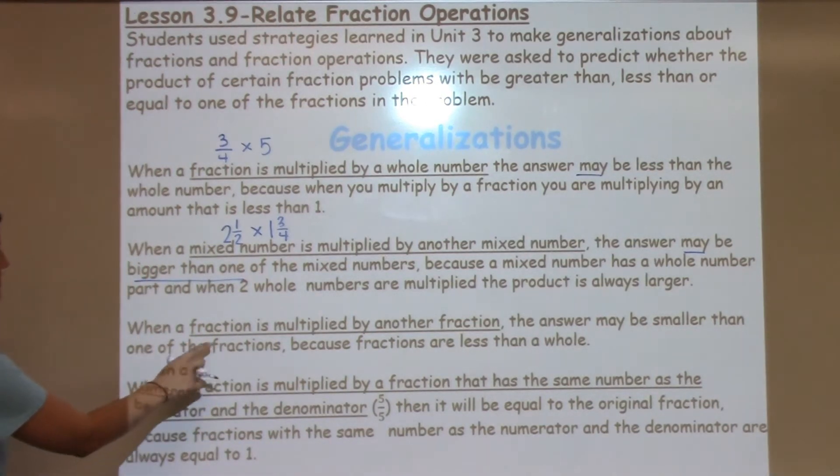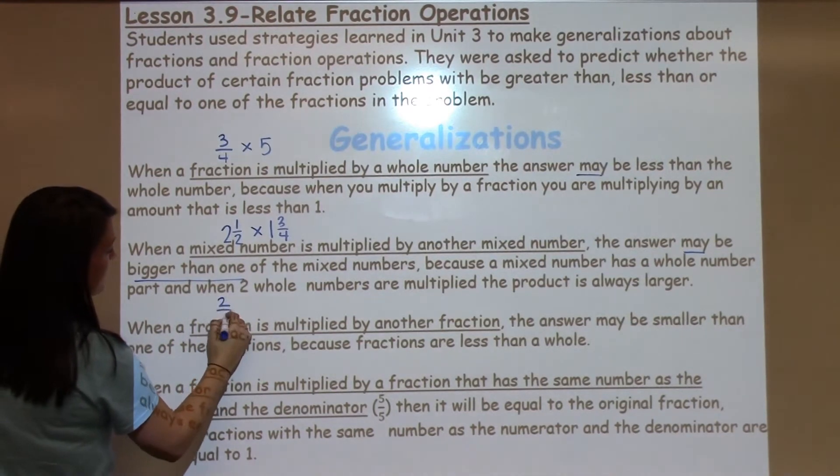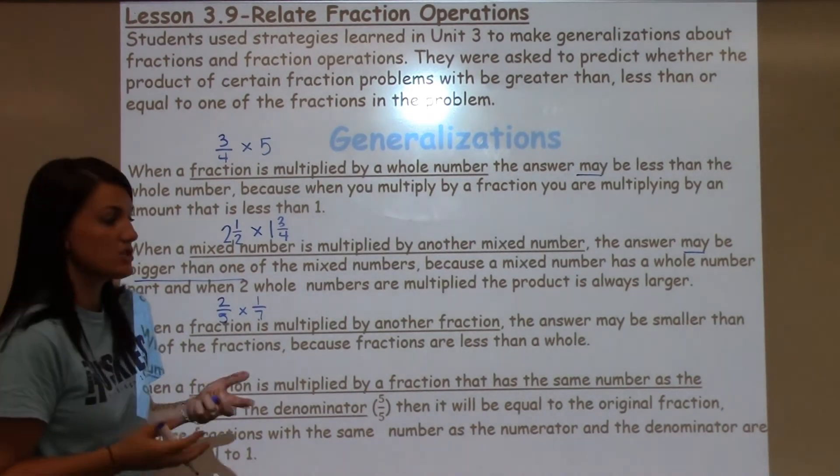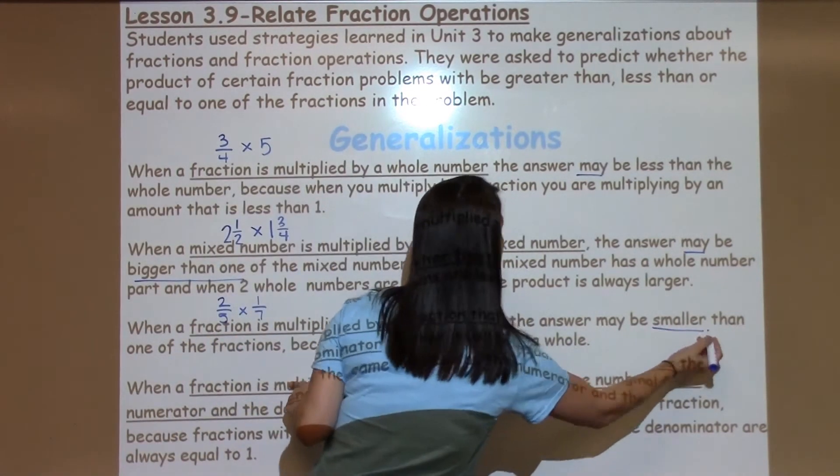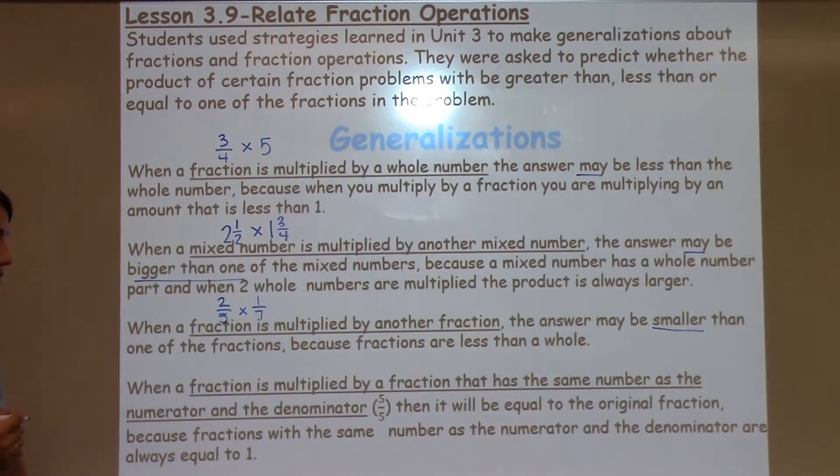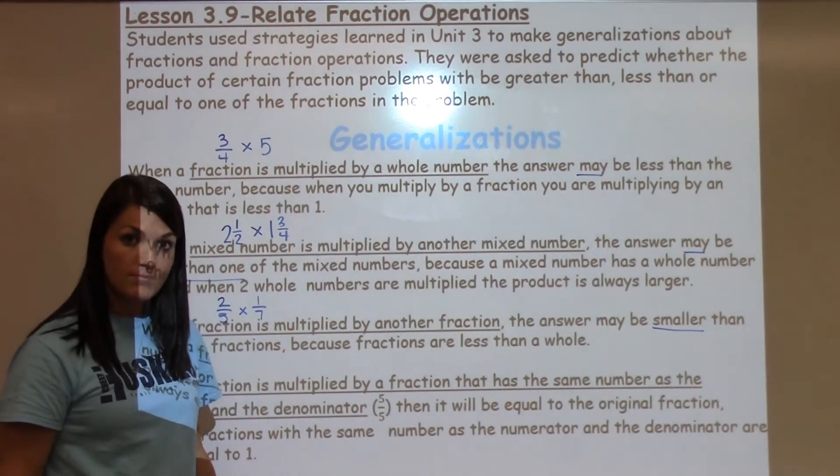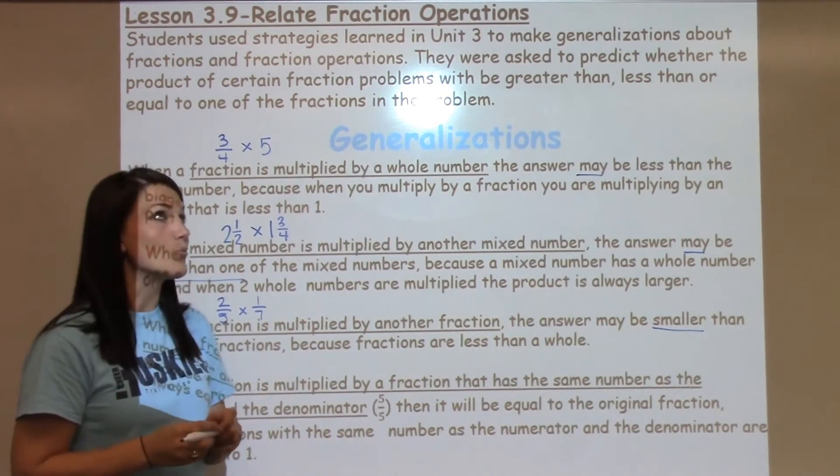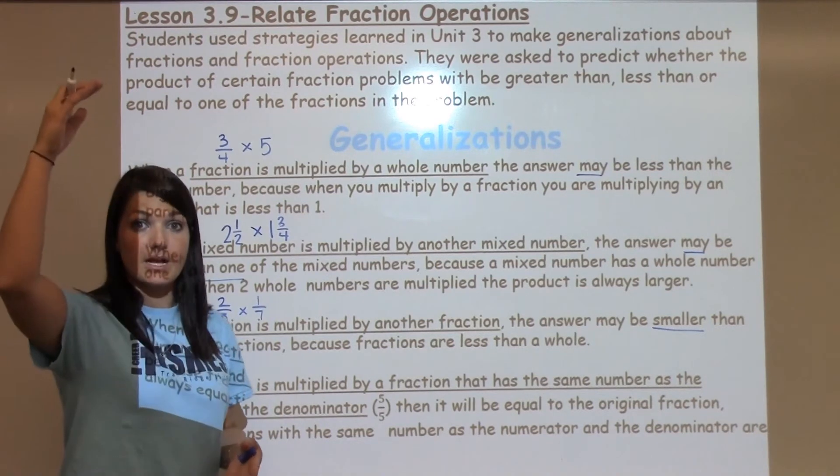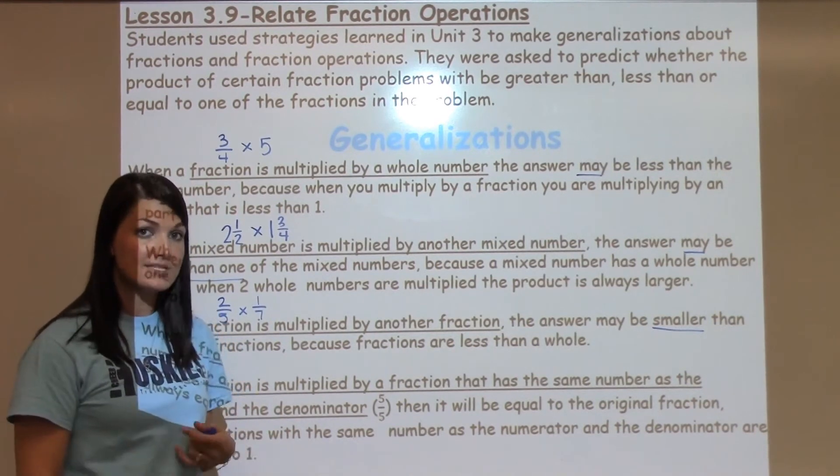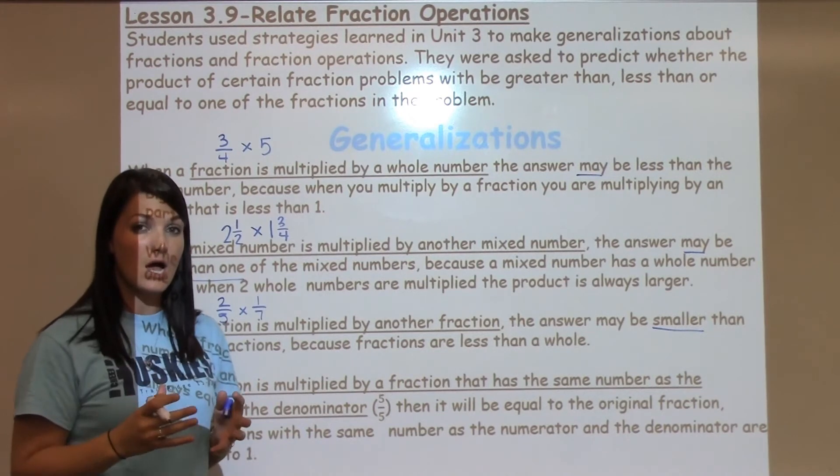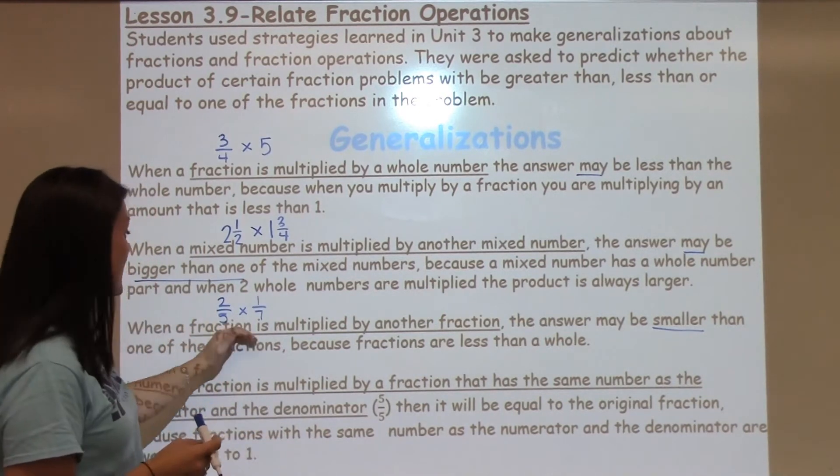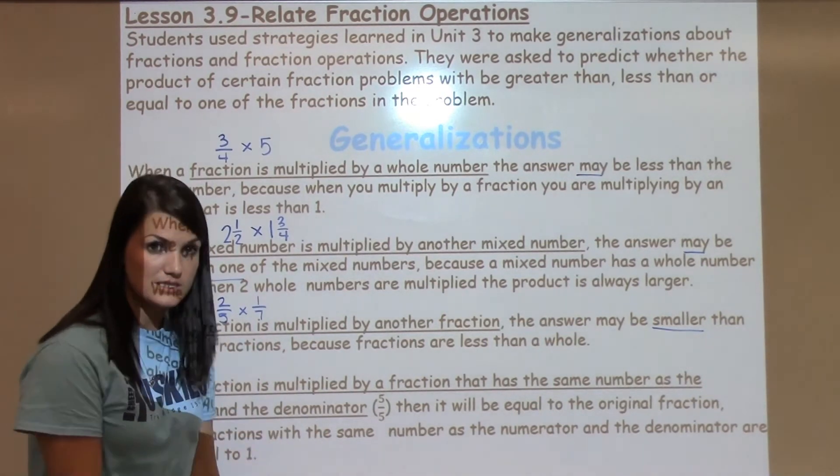The next one says, when a fraction is multiplied by another fraction. So, just any fraction, we'll use 2 fifths and 1 seventh. When you just multiply a fraction by a fraction, the answer is usually going to be smaller than 1 of the fractions because both fractions are less than a whole. When we multiply whole numbers, we always talk with the kids, whenever we multiply regular whole numbers, our answer is going to get bigger. But, the opposite happens with fractions because they're not whole numbers, they're just parts of a whole. So, when you multiply 2 parts of a whole or 2 fractions, the answer is actually going to get smaller.